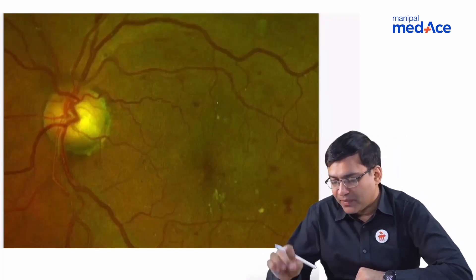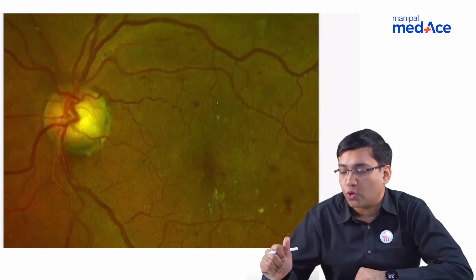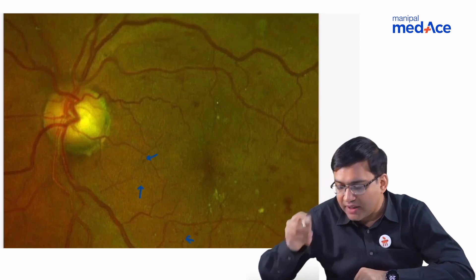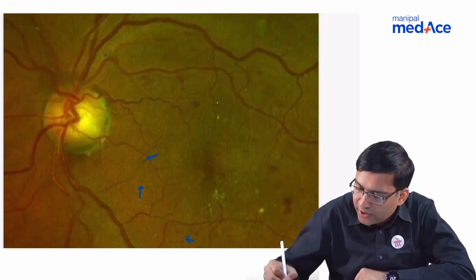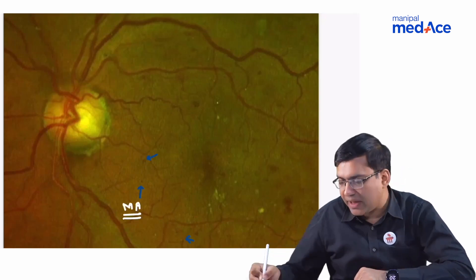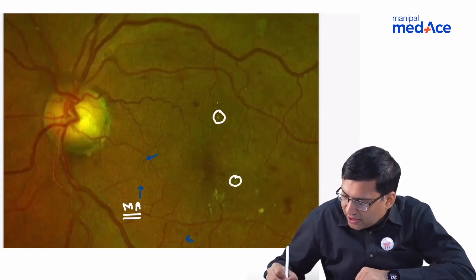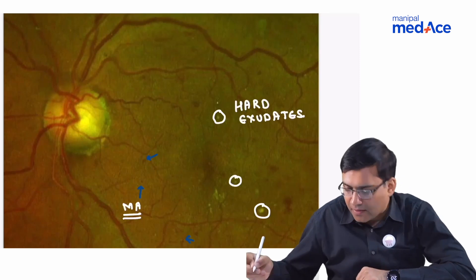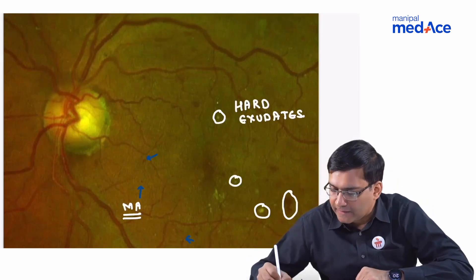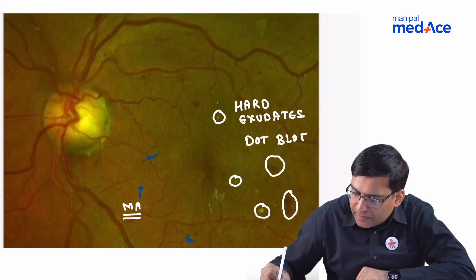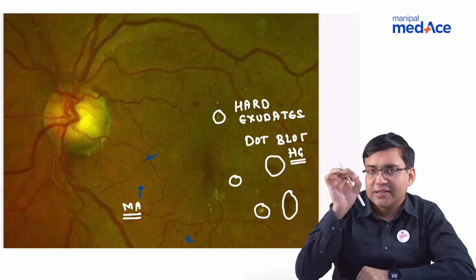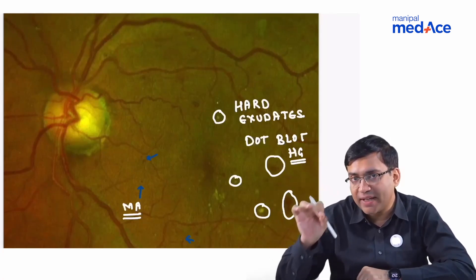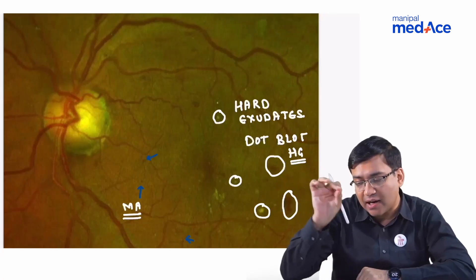Looking at this fundus picture, you can see many of these manifestations. The small pinpoint red spots are the microaneurysms (abbreviated MA). The yellowish lesions are the hard exudates. The red patches are the dot blot hemorrhages. So to summarize: pinpoint red spots are microaneurysms, larger areas of bleeding are hemorrhages, yellowish well-demarcated lesions around the macula are hard exudates, and fluffy lesions are cotton wool spots.